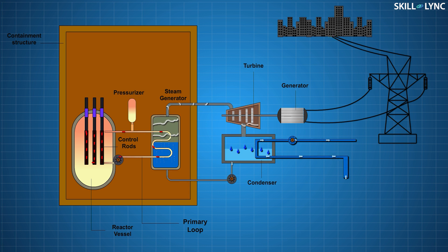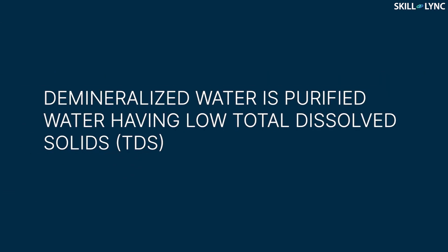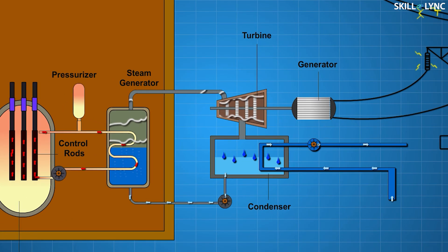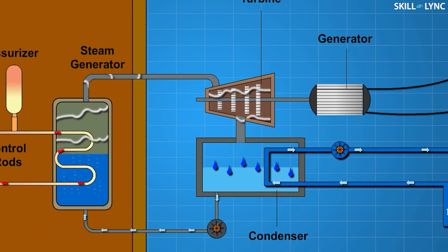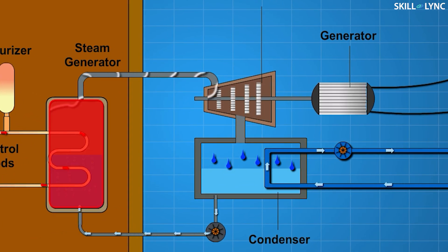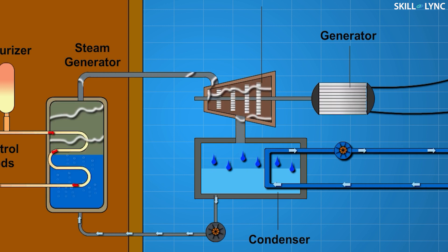The secondary loop uses demineralized water as a coolant. Why demineralized water? Because in this water, the dissolved minerals and ions are removed, which otherwise might result in reactor damage. The water at high temperature from the primary loop is sent to the heat exchanger through small tubes, where it transfers the heat through the walls of the tubes to the coolant at low pressure in the secondary loop.